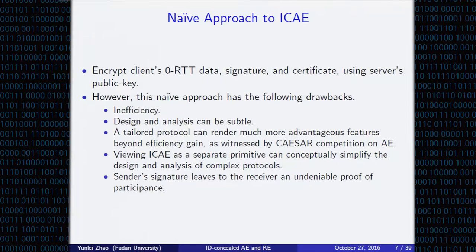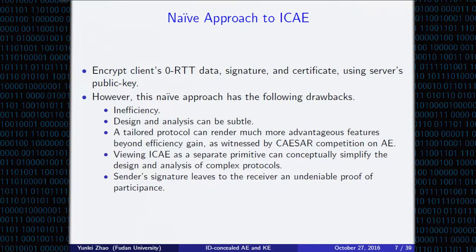There is a naive approach for IACE: we encrypt the client's zero RTT data and signed data, using the server's public key to encrypt the zero RTT data, the client's signature, and the client's public key certificate. However, this naive approach has drawbacks. First, it is not very efficient. Second, the design and analysis can be very subtle. For example, if one knows the client's signature on the data, one can re-encrypt the data and signature with the server's public key, resulting in a situation where two sessions are not matched but have the same peer views.